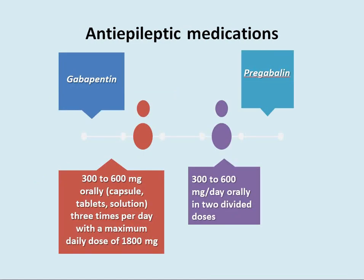Two important anti-epileptic medications are gabapentin and pregabalin. Gabapentin: normal dose is 300–600 mg orally — as capsule, tablet, or solution — three times per day, not more than 1800 mg. Pregabalin: 300–600 mg per day orally in two divided doses.